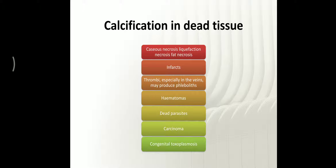In the case of infarction, after the infarction there is deposition of calcium over the dead cells, sometimes even in the myocardium. In the case of venous thrombosis, the deposition of calcium can produce a phlebolith. In hematoma of bones, the deposition of calcium is abnormal.